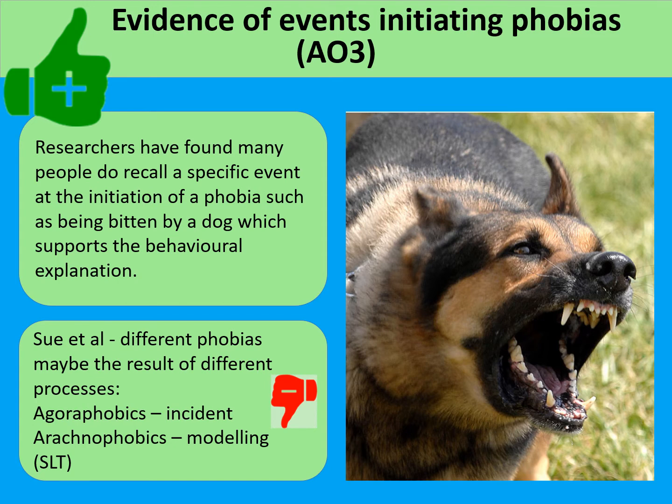However, Sue et al. said that different phobias may be the result of different processes. Agoraphobia — where people are scared of going outside and open spaces — could be because of a frightening incident that makes people scared to leave their house. But things like arachnophobia, a fear of spiders, is more likely to be learned through modelling, which is social learning theory, or it could be evolutionary. So that is evidence against the two-process model.